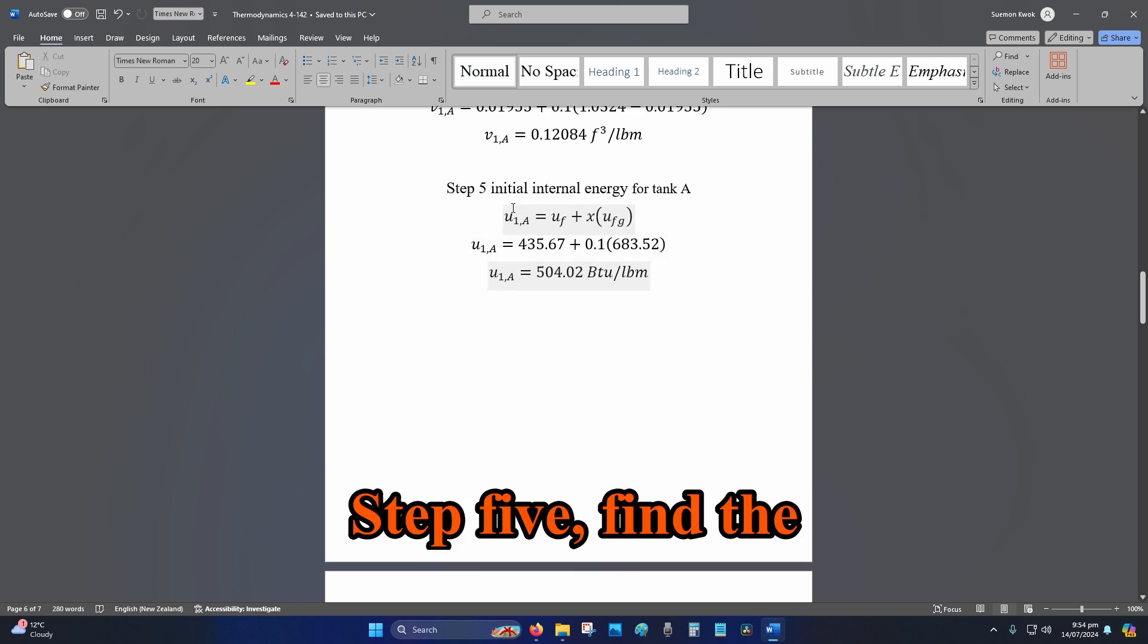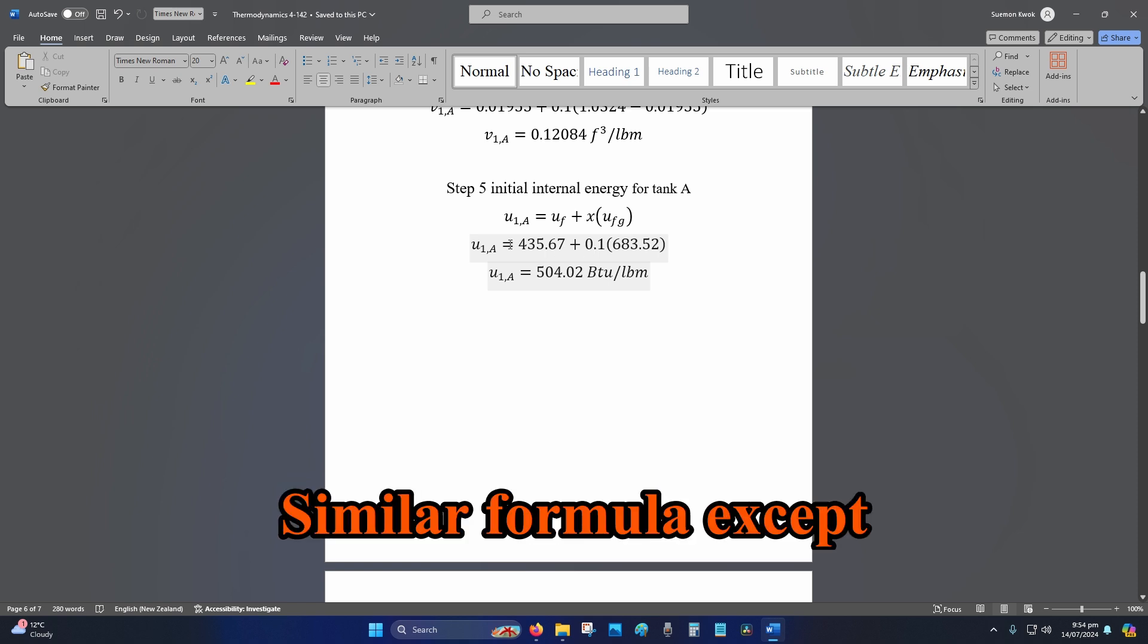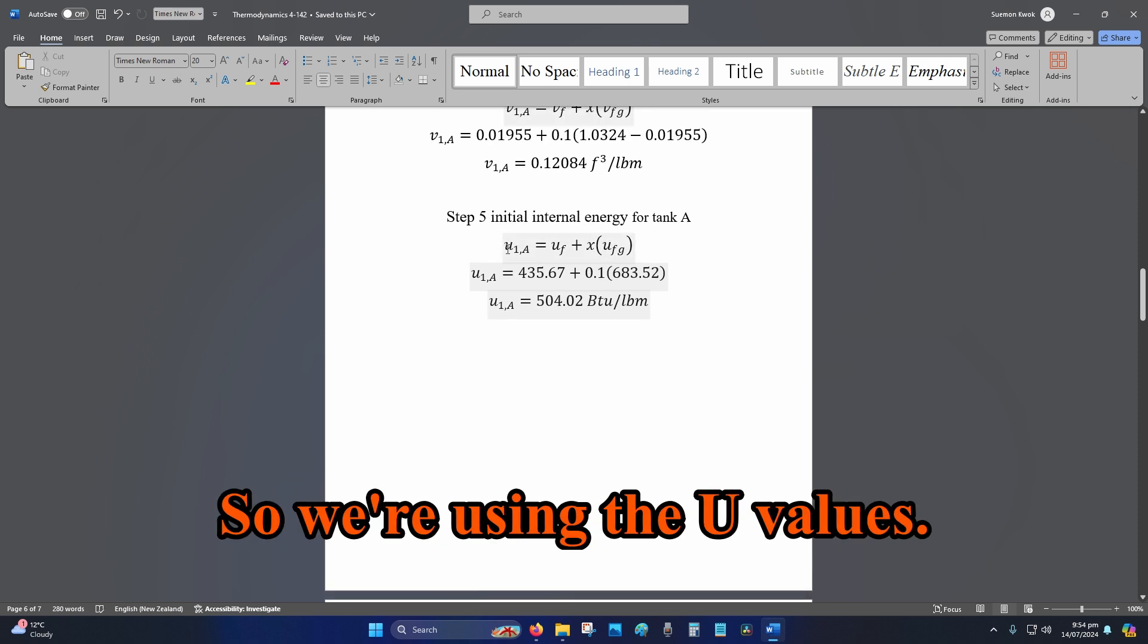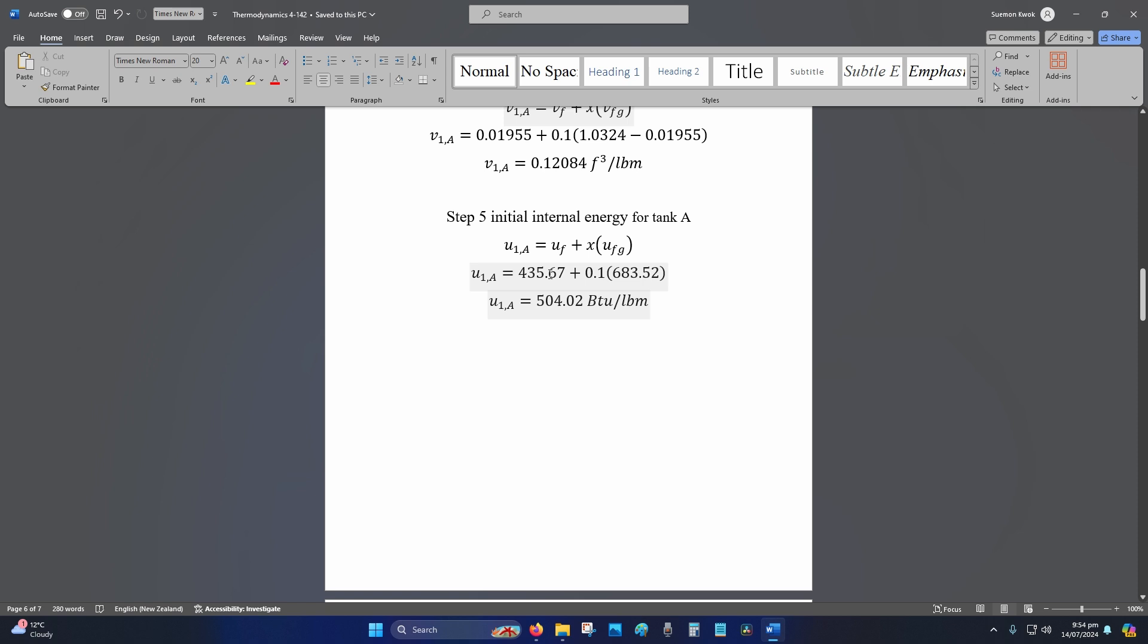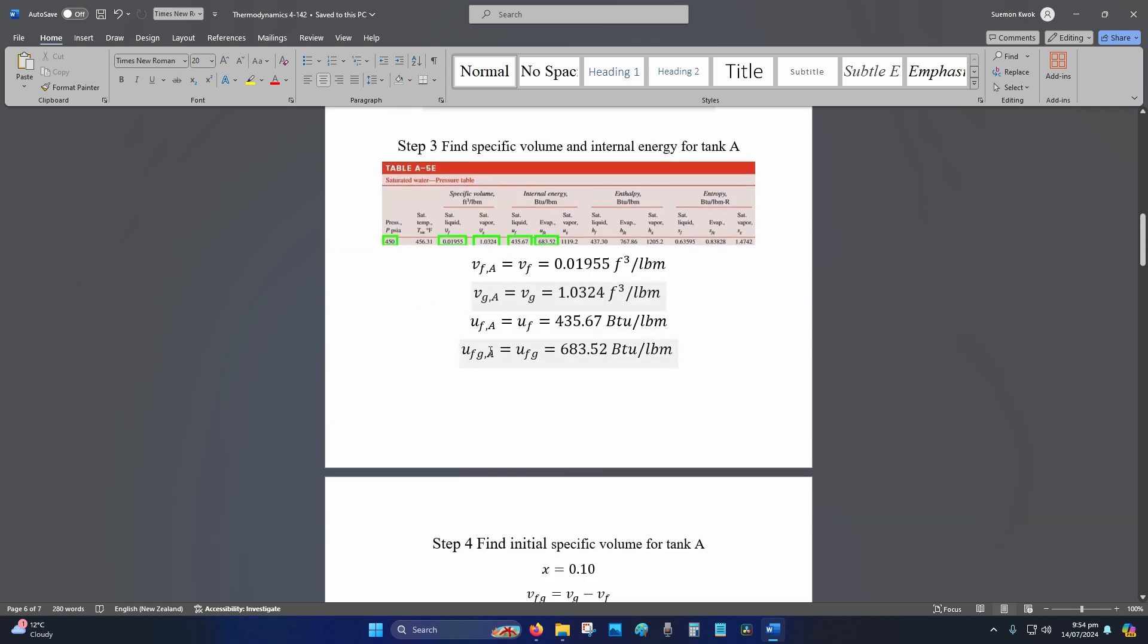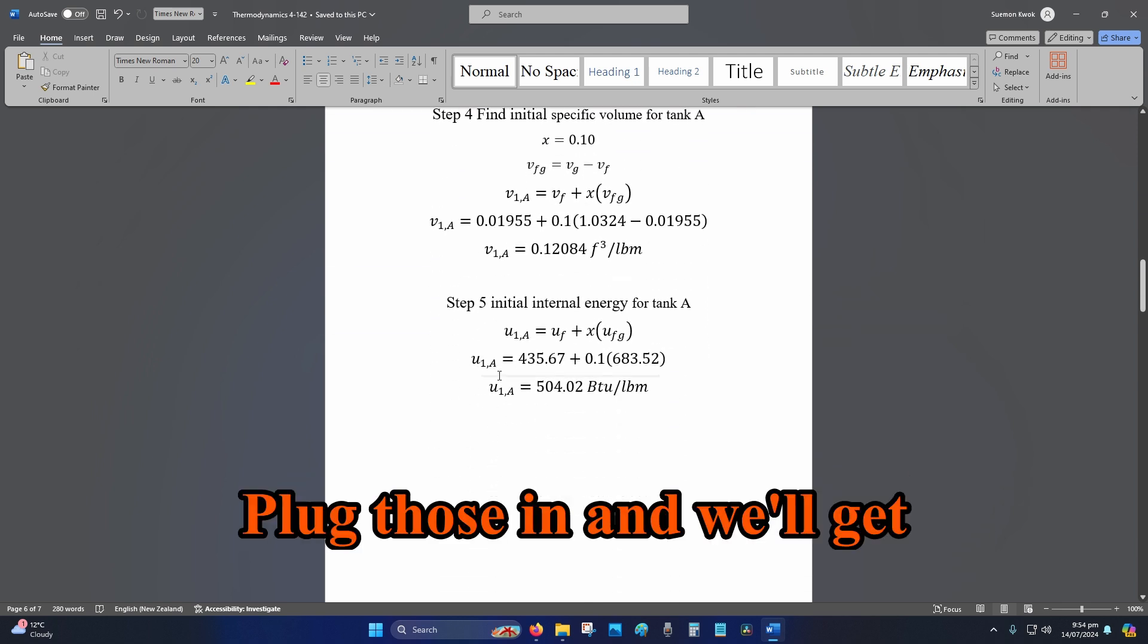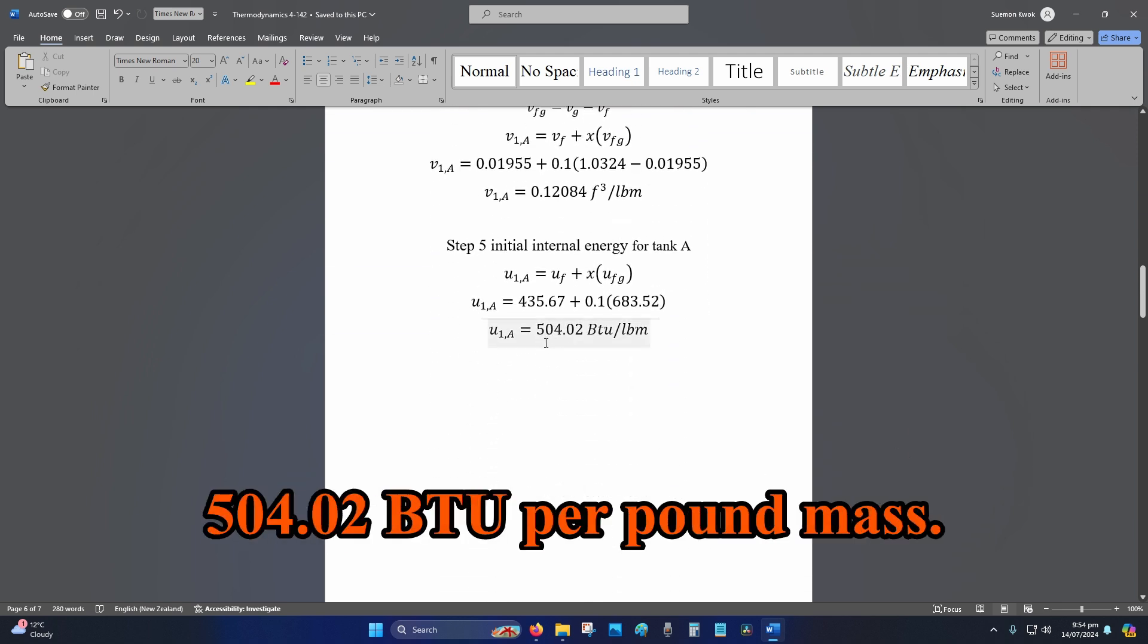Step 5, find the internal energy for tank A. Similar formula, except we're using the internal energy, so we're using the U values. Once again, they are found in step 3. So, UF and UFG. Plug those in, and we'll get 504.02 BTU per pound mass.